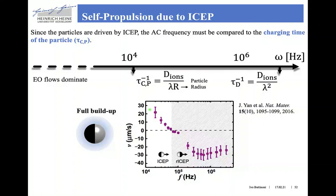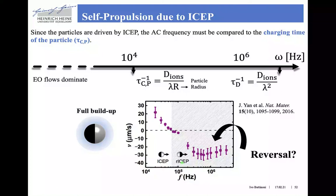There is also something strange that happens at frequencies larger than 100 kHz: in this region, the direction of motion changes, and self-propulsion starts to occur with the metal hemisphere heading instead of the dielectric hemisphere heading. The reason for this reversal — reverse-induced charge electrophoresis — is actually unclear, but it is somewhat related to the diffusion time of ions across the particle perimeter. There has been a lot of speculation, but no conclusive experiment or theory about that.